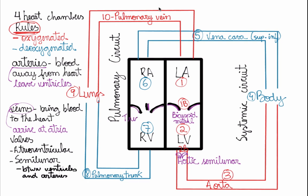The tricuspid valve is found between the right atrium and the right ventricle — an atrioventricular valve made of three cusps, hence tricuspid. Finally, the pulmonary semilunar valve is located between the right ventricle and the pulmonary trunk.